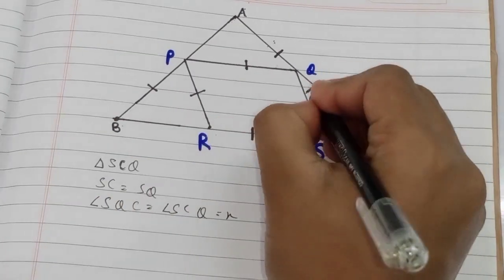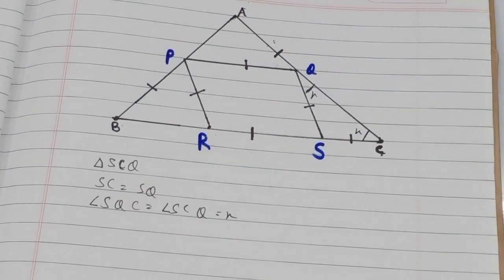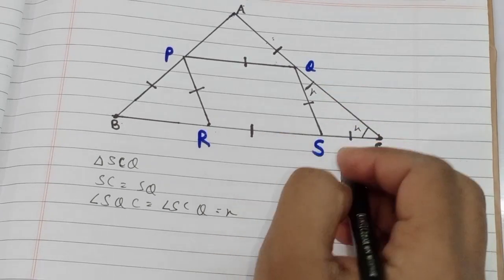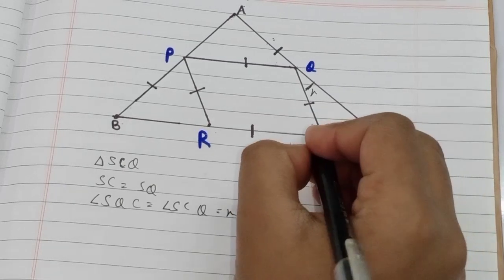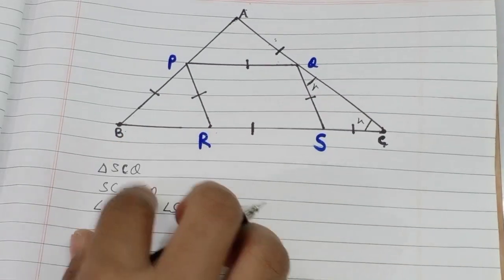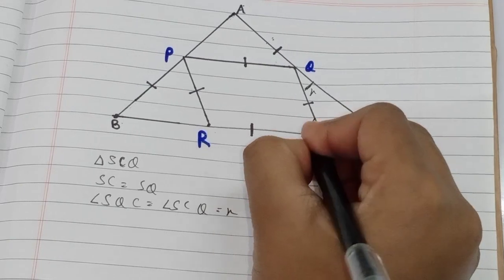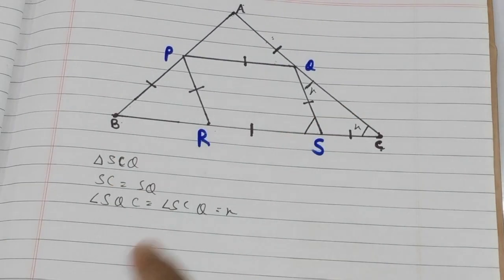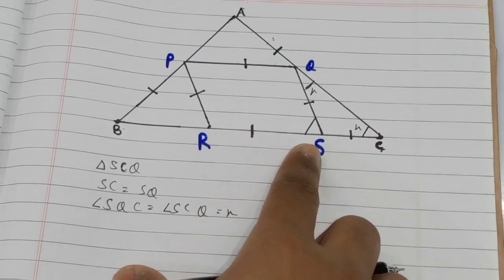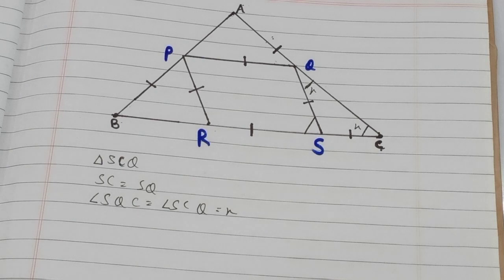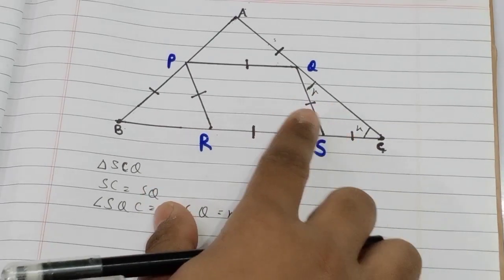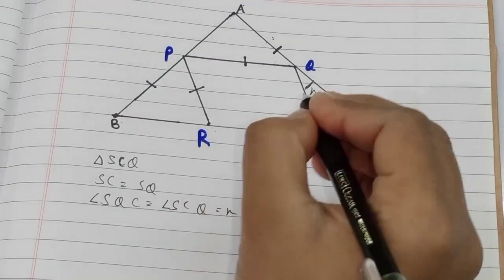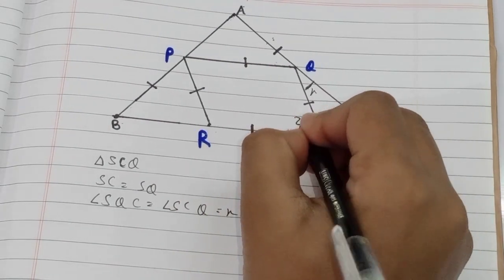Now, if we look after triangle SCQ, side S is extended to R toward B. Since the third side is extended, the exterior angle formed equals the sum of the two non-adjacent interior angles, so that angle equals 2x. Therefore, angle QSR is equal to 2x.